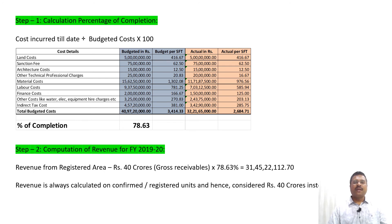Step 1: Computation of percentage of completion. Percentage of completion is computed by dividing actual cost by budgeted cost multiplied by 100, to arrive at the actual percentage of completion of the project. As per the numbers given, it is 78.63% — that is the project completion as on 31st March 2020.